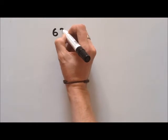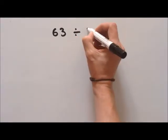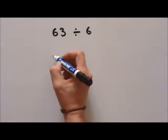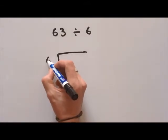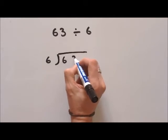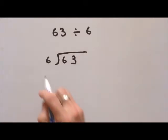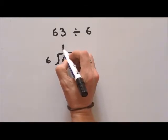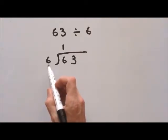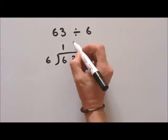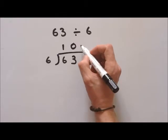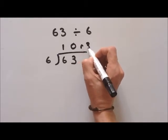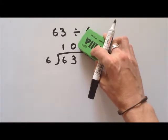Let's start off with sixty-three divided by six. We put it in our bus stop — six on the outside, sixty-three inside. How many times can six come out of six? Well, it can come out once. How many times can six come out of three? Well, you can't do it, so you put zero up here.